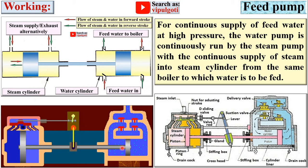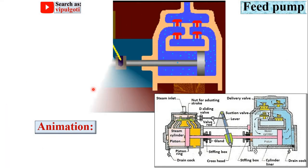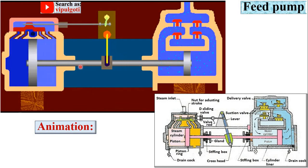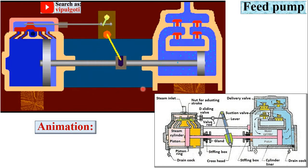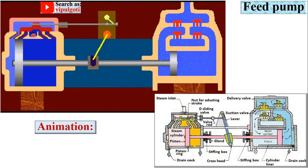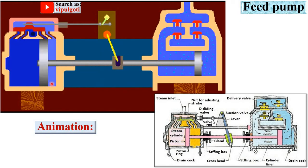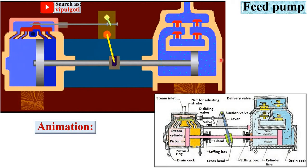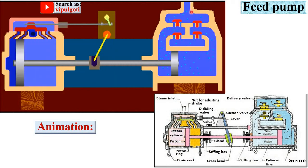Now let's see the animation of the duplex feed pump so you can easily understand the working. Here you can see the D-slide valve, the steam pump, and the water pump, from which high pressure water is supplied to the boiler.